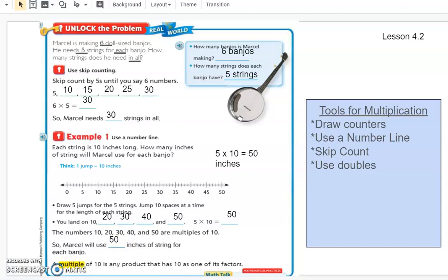Now, we call these multiples of 10 because any product that has 10 as one of its factors is going to be a multiple of 10. So if you're thinking about factors here, we know that 20, 30, 40, 50, those are all increments or multiples of 10. So we often use that term.